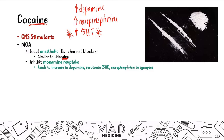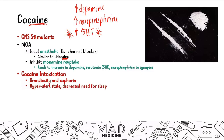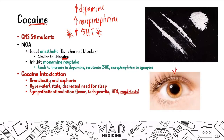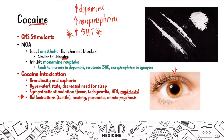Cocaine intoxication presents very similarly to amphetamine intoxication with grandiosity, euphoria, a hyper-alert or stimulated state, and sympathetic stimulation including fever, tachycardia, hypertension, and mydriasis. However, you are also going to see hallucinations — specifically tactile hallucinations — which differentiate cocaine from amphetamine. These may present with anxiety, paranoia, and can mimic psychosis.